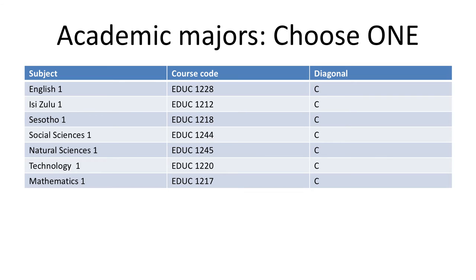So what are the options available to you at the WIT School of Education? You will see that next to each subject is a letter. This letter indicates the diagonal on the timetable on which this course is presented. Each subject has a course code which begins with the letters EDUC. Choose one of these subjects and register for it.